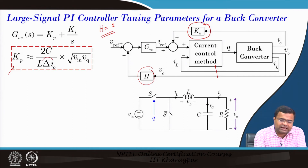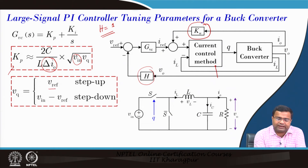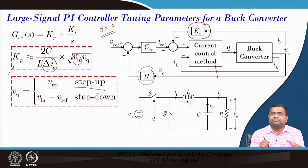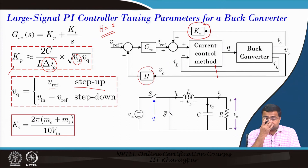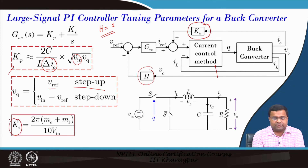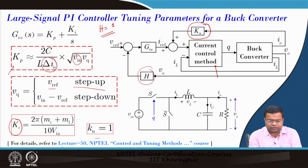Here delta-I0 is the load step size, Vin is the input voltage, L is the inductor, and C is the capacitor. VQ equals Vref during a step-up transient and Vin minus Vref during a step-down transient; when the input voltage is near 50%, they are actually identical. The normalized gain here is 1. The integral gain derivation has also been discussed. So we have derived both the proportional gain and integral gain using the large-signal tuning approach — also discussed in lecture 50 of our earlier course.